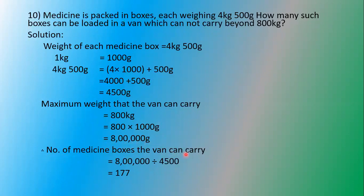The number of medicine boxes that the van can carry is our question. How many boxes can be carried by the van? The maximum weight capacity of the van — 8 lakh grams — divided by the weight of one box, 4500 grams. For the division: 8,00,000 divided by 4500. We take the first digits — 8000 divided by 4500 gives 1. The remainder is 3500.